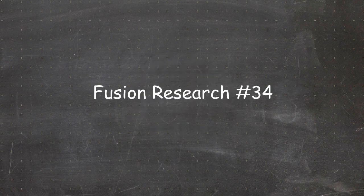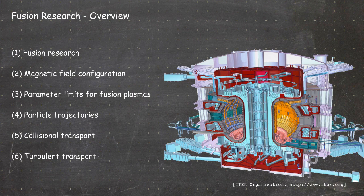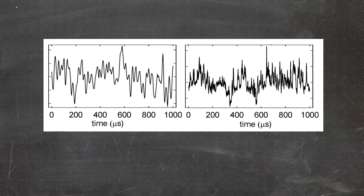Hello everybody and welcome to video number 34 of the online version of the Fusion Research Lecture. We are in Chapter 6, Turbulent Transport. In the last video we talked about the underlying electrostatic instabilities — the interchange instability and the drift-wave instability leading to turbulence. In this video we will have a look at an approximate or estimating expression for the turbulent transport.